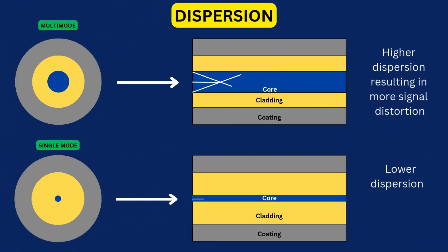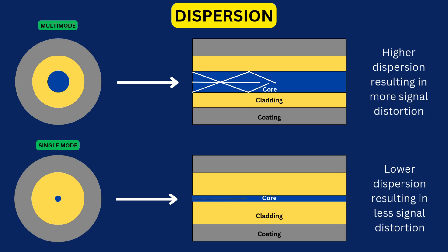Single-mode has lower dispersion, resulting in less signal distortion. Multi-mode has higher dispersion, resulting in more signal distortion.